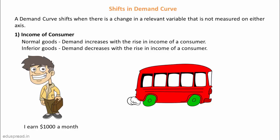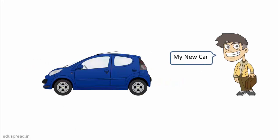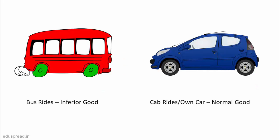No. Maybe he will start taking cab rides, or maybe he will buy his own car — not a luxury one, but maybe a cheaper one on EMI. So in this example, bus ride is an inferior good and cab ride is a normal good, as John will start taking fewer bus rides and more cab rides as his income increases.